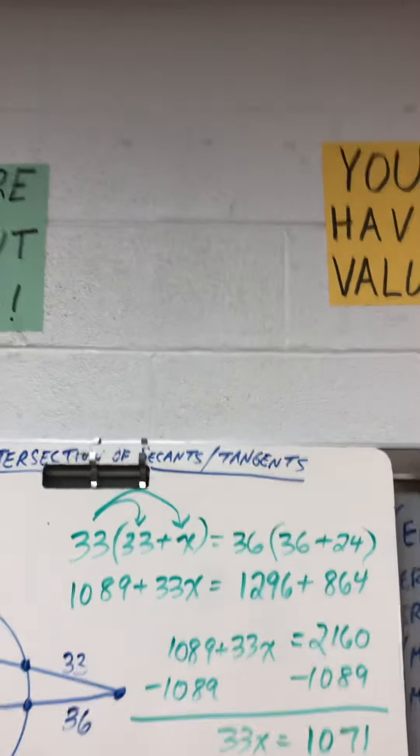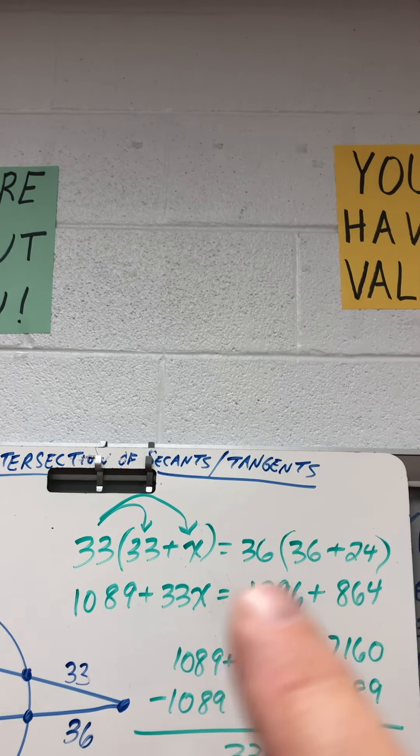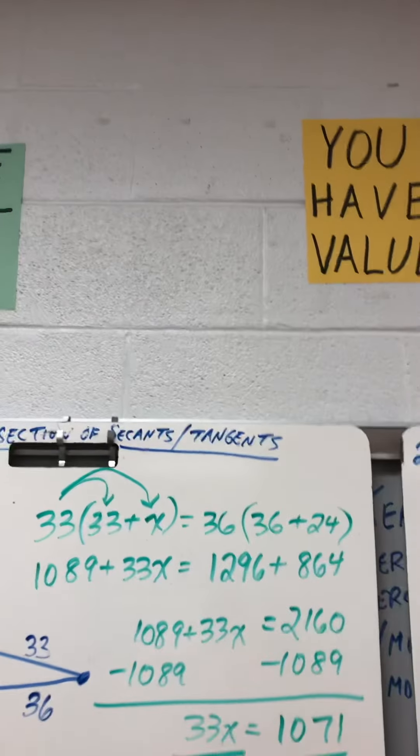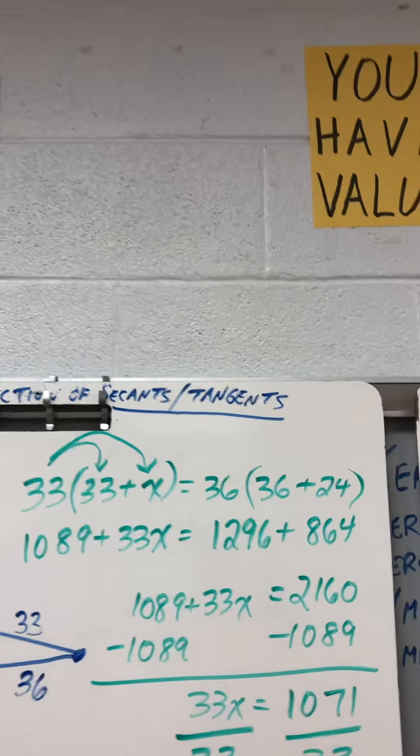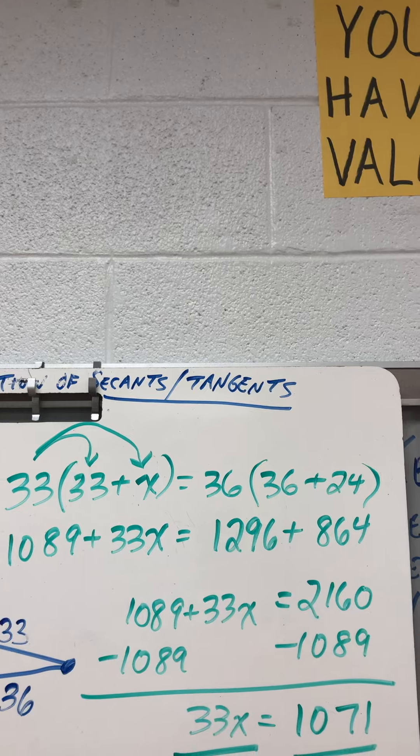Now, of course, if you wanted to, you could do 36 plus 24, add those together and multiply it by 36. You get the same answer. Meanwhile, 1089 plus 33X equals 2160.